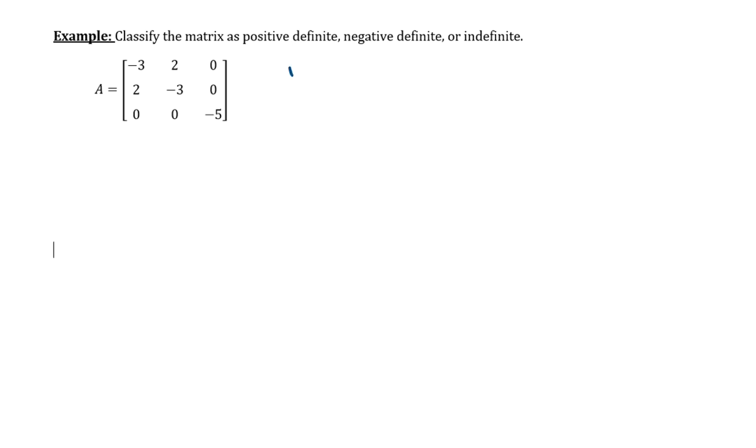Alright, so the first thing we're going to do is form the matrix λI minus A. Alright, by now I'm pretty sure we're hip to that, so along the main diagonal, lambda plus 3 the first entry, lambda plus 3 the second entry, and then lambda plus 5 the third entry along the main diagonal. And everything off the main diagonal gets negated.